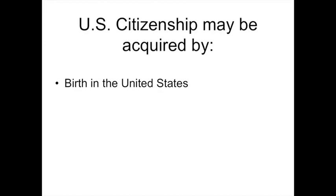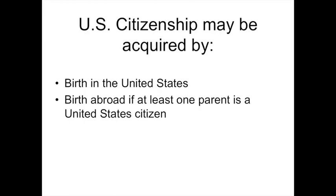We discussed naturalization as one path to becoming a citizen of the United States. There are actually three ways that U.S. citizenship may be acquired. The first is birth in the United States — a topic we will explore in more depth in coming lectures. The second is birth abroad if at least one parent is a United States citizen. And the third, which is the topic for this lecture, is naturalization. So let's assume that you are an LPR, a lawful permanent resident, a green card holder, and you want to become a citizen. What are the requirements for doing so?